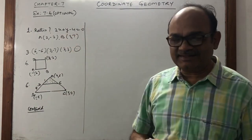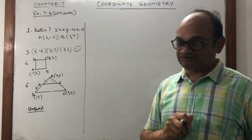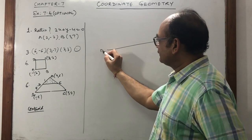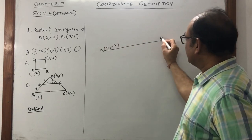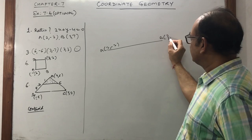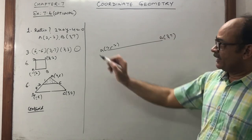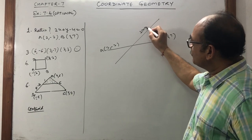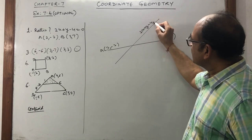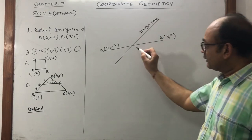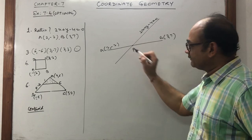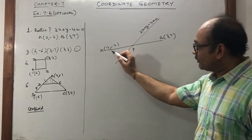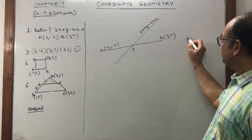First we start with question number 1. The line segment joining A(2,-2) and B(3,-7), and another line 2x plus y minus 4 equals 0, cut at the point say P. We want to calculate what is the ratio between AP and PB.